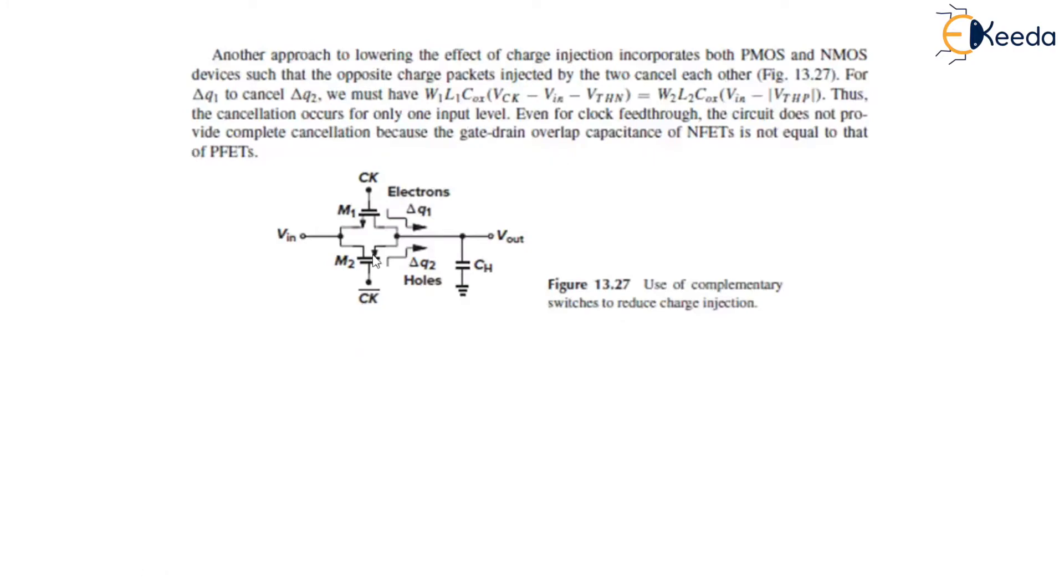The another technique to lower the effect of charge injection incorporates both PMOS and NMOS devices such that the opposite charge packets injected by the two cancel each other. For ΔQ1 to cancel ΔQ2, we must have W₁L₁C_OX(V_CK - V_IN - V_TH1) equal to W₂L₂C_OX. This is simply the charge equation. This we have taken from the current equation, we derive the charge for NMOS M1 and for PMOS M2.